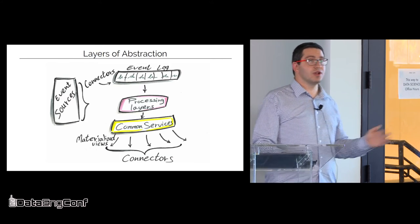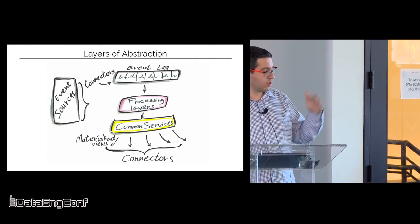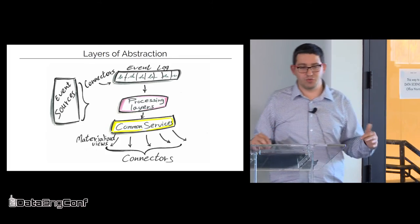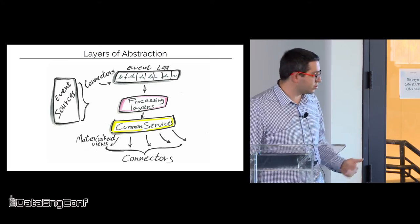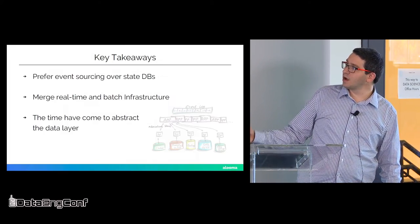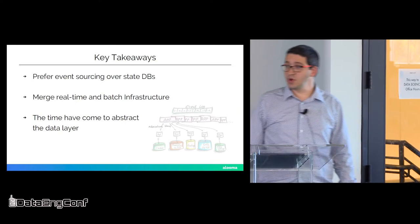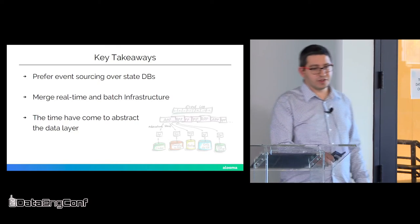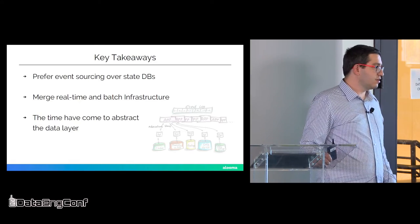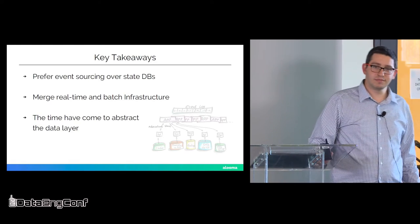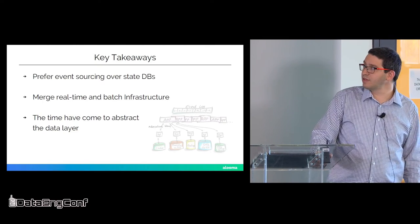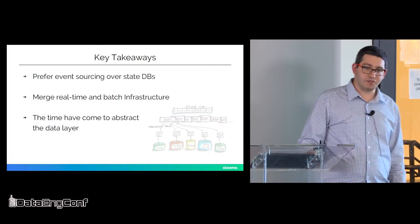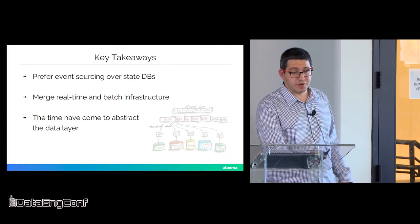Now it is still okay to do some processing in batch. So for example, if we do want to run some job that will take a very long time, it's okay to do it in a batch processing way, just let's not do it twice. If we need to do it once on the stream and then once in batch, then we're doing something wrong. So if I want to recap the three main things that the way I think we should build our applications today are: let's prefer event sourcing over state databases and let's just do append-only updates and no deletes, just append. And then merge the real-time and the batch infrastructure into the real-time infrastructure because we have good enough tools to do that today and the time has come to abstract the data layer.